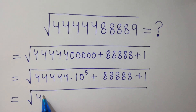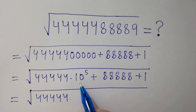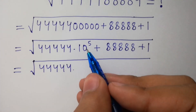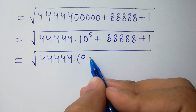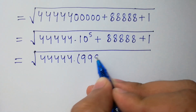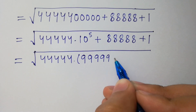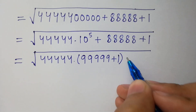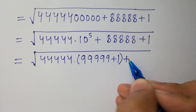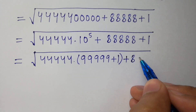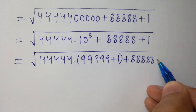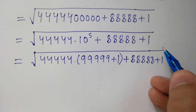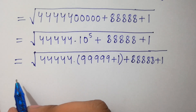We can write 5 times 4 × 10^5, and 10 to the power 5 can be written as 5 times 9 × 10^5, and 10 to the power 5, and 10 to the power 5, as it is times 10^5 plus 1.